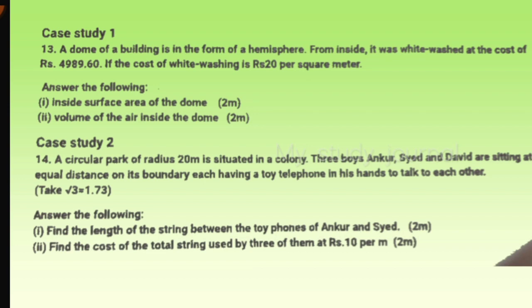Then case study two: a circular park of radius 20 meters is situated in a colony. Three boys Ankur, Syed, and David are sitting equidistant on its boundary, each having a toy telephone in his hands to talk to each other. Take square root 3 equal to 1.73. These are NCERT questions only, but they asked another question. We have to do it on our own. In NCERT they just asked one question; as this is case-based, they elaborated and asked a bit differently.